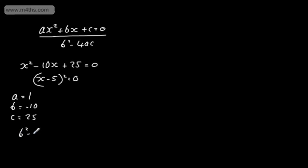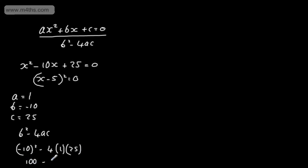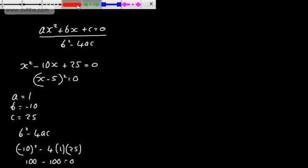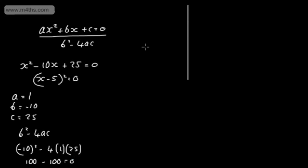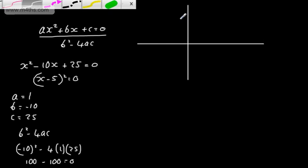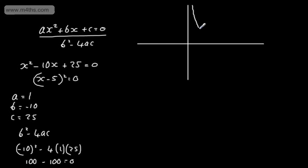So b squared minus 4ac gives us minus 10 squared minus 4 times 1 times 25, which is 100 minus 100, equal to 0. When we graph this, we've got our parabola touching the x-axis at the point 5, 0.